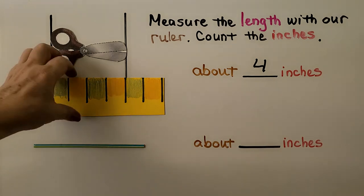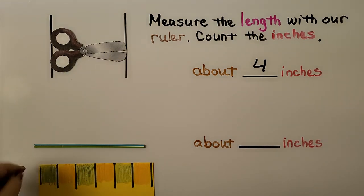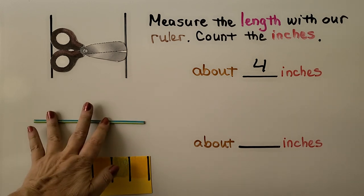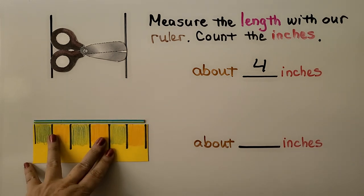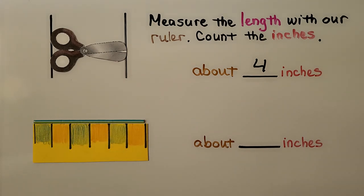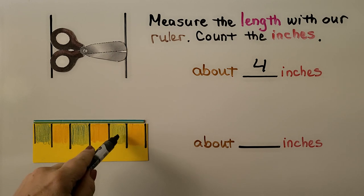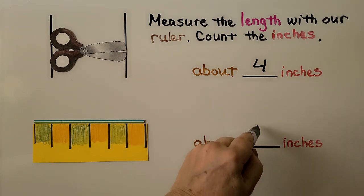So now we can measure the next one. We line up this line right here with the very edge of what we're measuring. Let's move it up a little bit. We line it up really nice and then we count the spaces in between the lines. We have one, two, three, four, five, six. It must be about six inches.